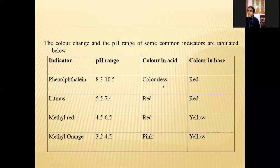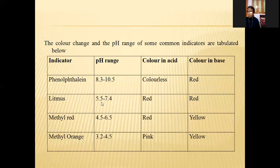Phenolphthalein is colorless in acid — as it is a weak acid, mixing it with acid produces no neutralization reaction, so the color does not change. In base it gives a red or pink color. Litmus has a pH range of 5.5 to 7.4, and its color in acid is red. Methyl red has a pH range of 4.5 to 6.5 — red in acid and yellow in base. Methyl orange has a pH range of 3.2 to 4.5 — pink in acid and yellow in base.